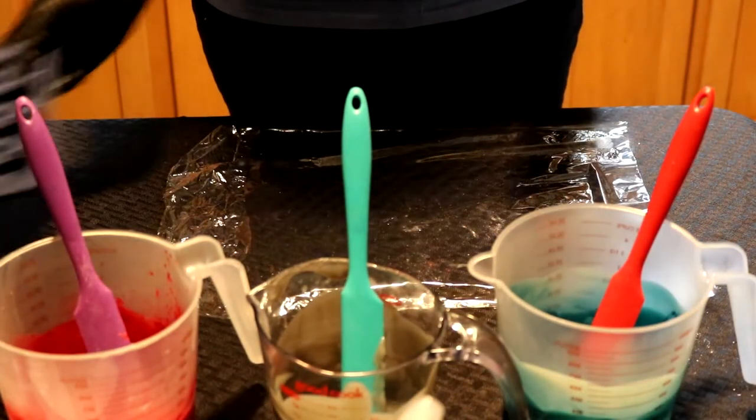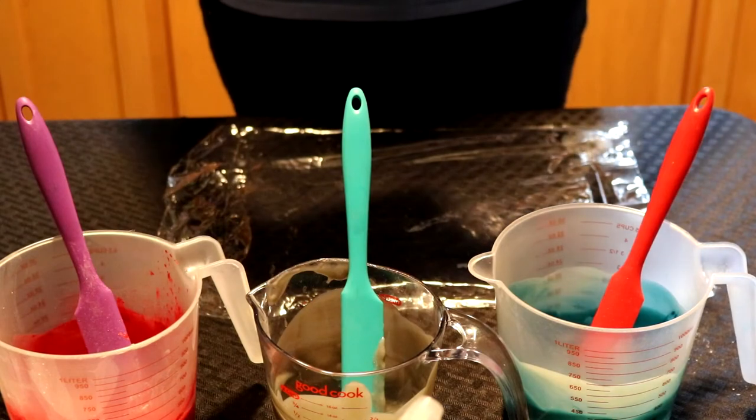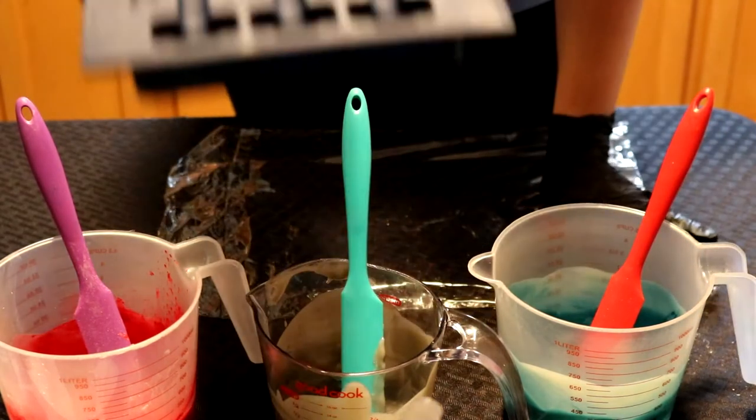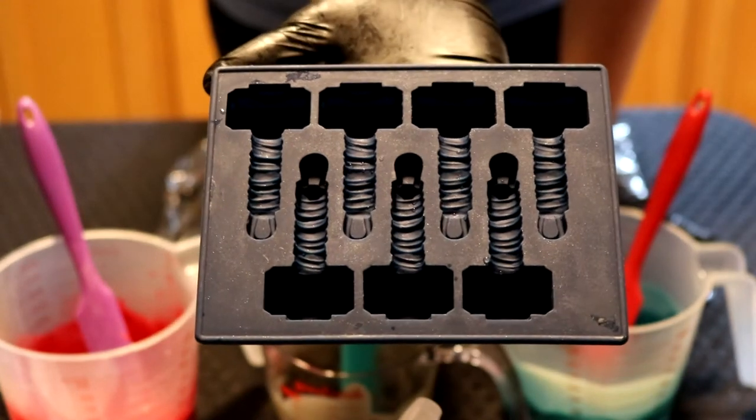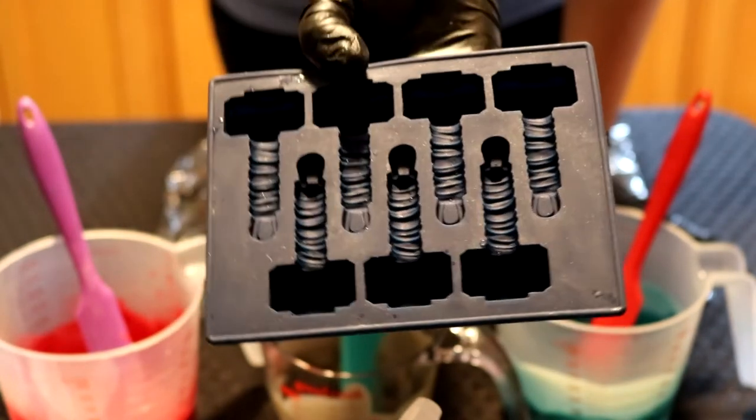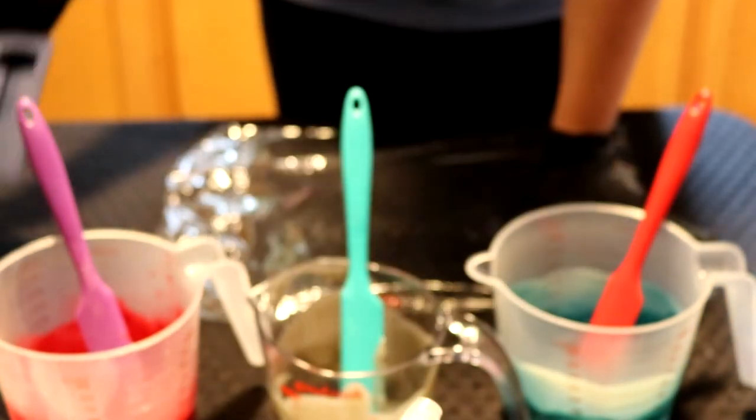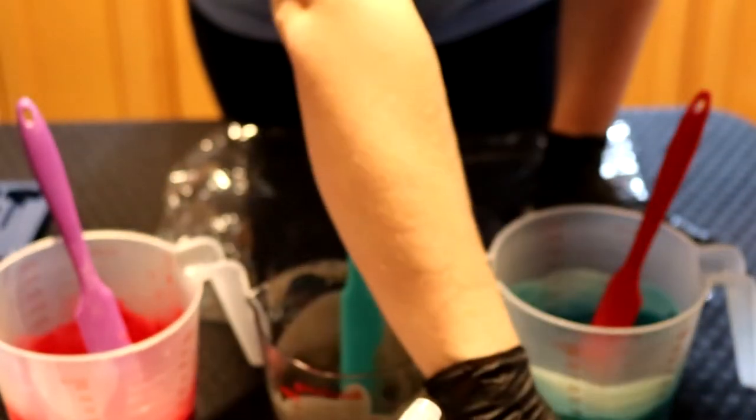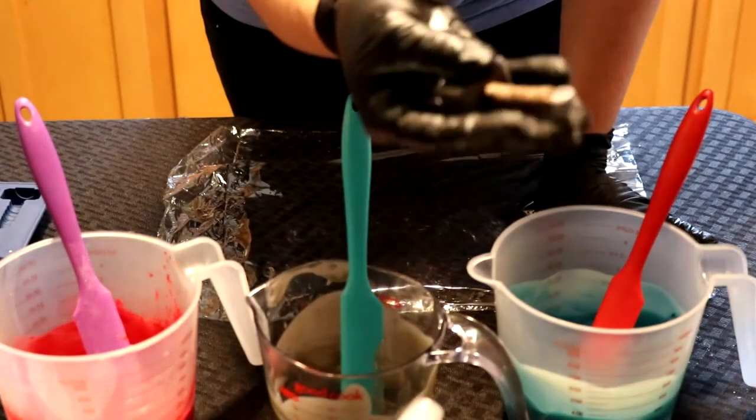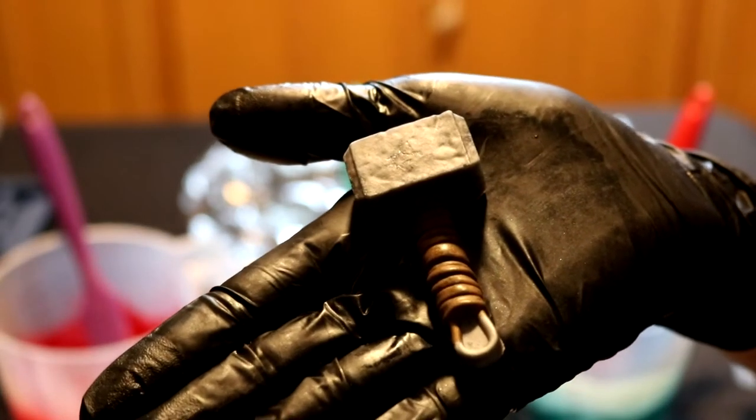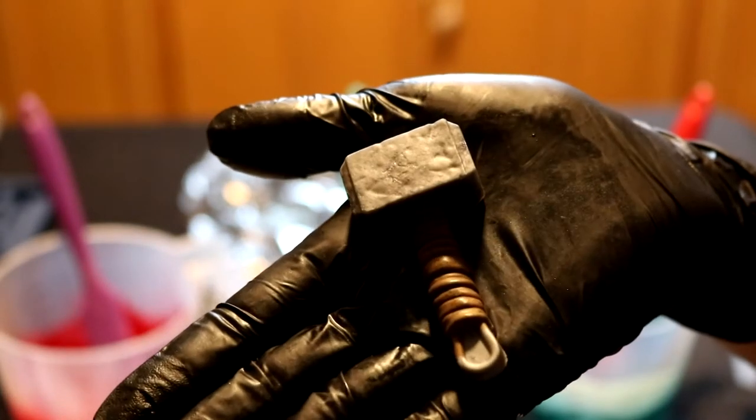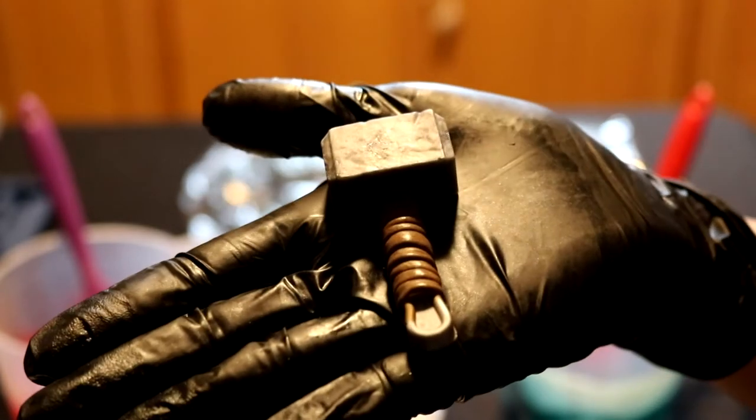So while we're waiting for our piping to harden up, I just wanted to take a minute and show you guys the mold that I used to make the hammers. I got this mold on Amazon. It is actually an ice cube mold. There are tons of cool ice cube molds out there that you can use for soap making. Here we go, try to give you a close-up view of the hammers. They're not perfect, but they're pretty awesome I think.